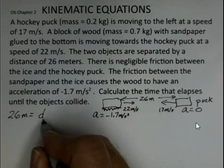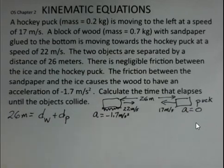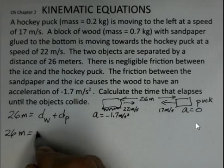So what can we say? Well we can say that the 26 meters equals the distance that the wood travels plus the distance that the hockey puck travels. So there's a starting equation: 26 meters equal those two distances.